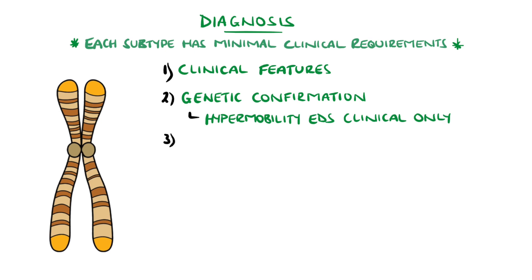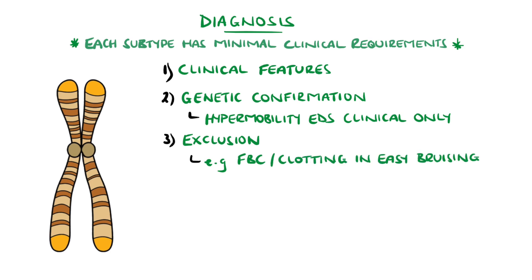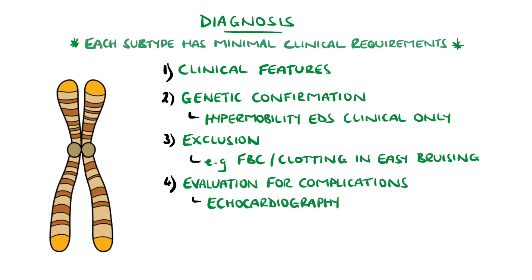Lab investigations can include a full blood count and clotting studies for people presenting with easy bruising, to rule out other causes. Imaging such as echocardiography is done to assess for complications like mitral valve prolapse and aortic root dilatation.